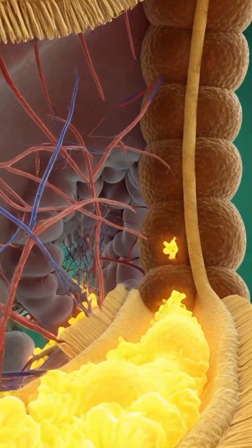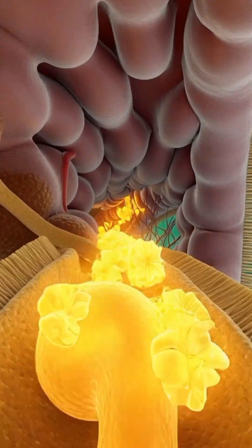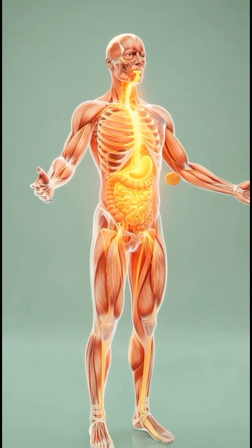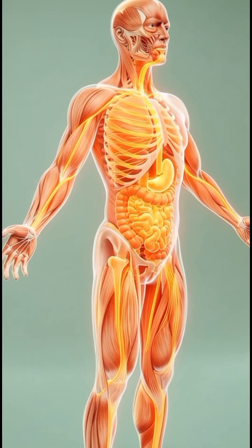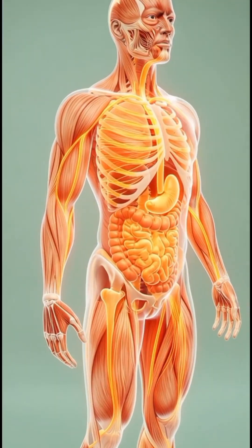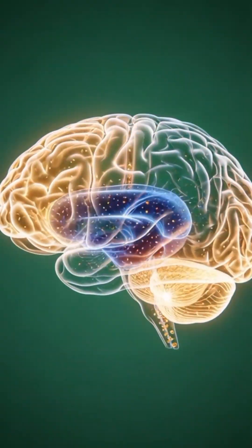Inside the intestines, its vitamins, minerals, and natural energy are absorbed through millions of tiny villi into the bloodstream. These nutrients spread throughout the body,